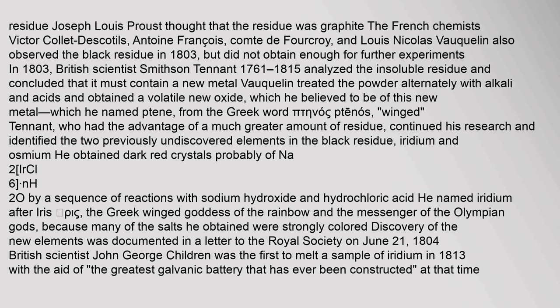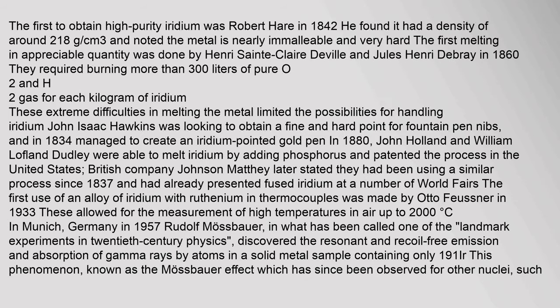Tennant obtained dark red crystals, probably of Na2[IrCl6]·2H2O, by a sequence of reactions with sodium hydroxide and hydrochloric acid. He named iridium after Iris, the Greek winged goddess of the rainbow and the messenger of the Olympian gods, because many of the salts he obtained were strongly colored. Discovery of the new elements was documented in a letter to the Royal Society on June 21, 1804. British scientist John George Children was the first to melt a sample of iridium in 1813. The first to obtain high purity iridium was Robert Hare in 1842, who found it had a density of around 21.8 g/cm³.